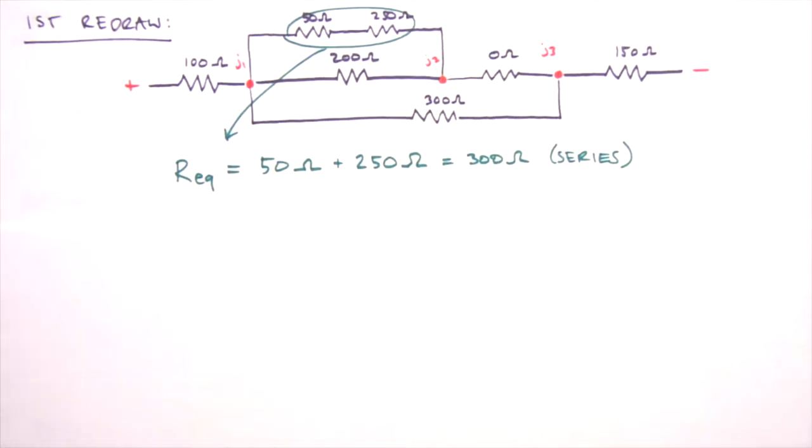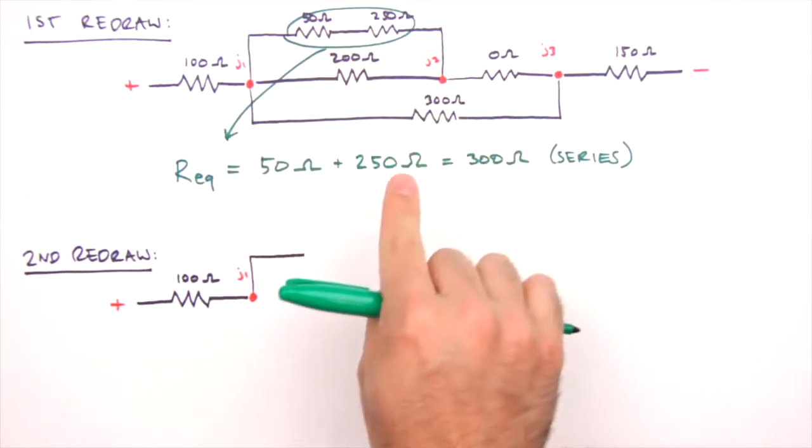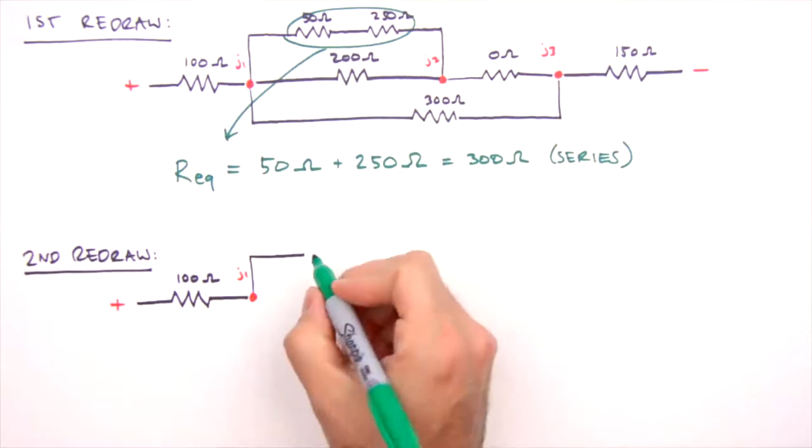And this brings us to our second redraw. We'll redraw the entire circuit, but in place of the 50 Ohm and 250 Ohm resistors, we'll draw a 300 Ohm resistor, like so.